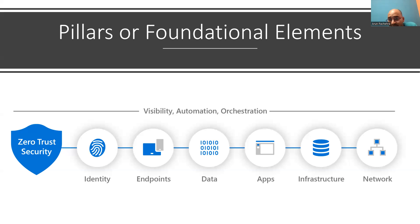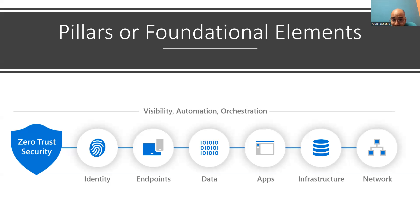If we talk about applications: applications and APIs provide the interface by which data is consumed. There may be legacy on-premises, lifted-and-shifted cloud workloads, or modern SaaS applications. Apply controls and technologies to discover shadow IT, ensure appropriate in-app permissions, gate access based on real-time analytics, monitor for abnormal behavior, control user actions, and validate secure configuration options. That's how we apply the Zero Trust approach to applications.